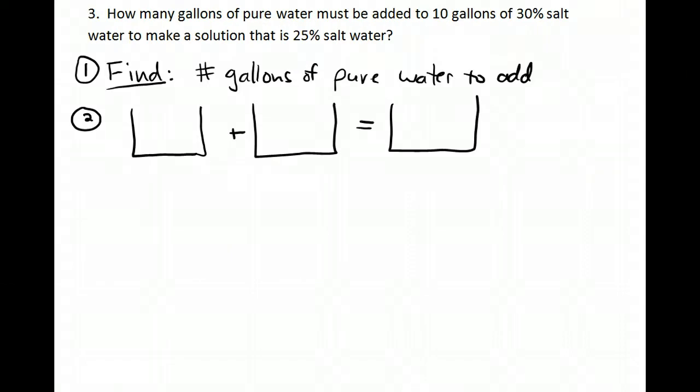This last example is an example of diluting a concentration to get a less concentrated solution. I'm trying to find out how many gallons of pure water must be added to 10 gallons of 30% salt water to make a solution that's 25% salt water. What we have here: I've got 30% salt and I've got 10 gallons. If I'm going to add pure water, pure water is 0% salt. How much do I have? Well, I don't know, that's my x. My mixture is going to be 25% salt. How much do I have? According to this picture, I've got 10 plus x.